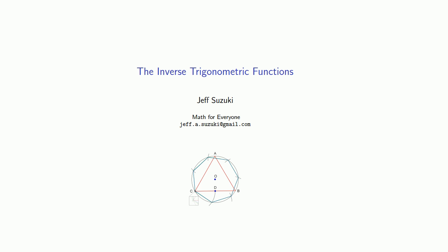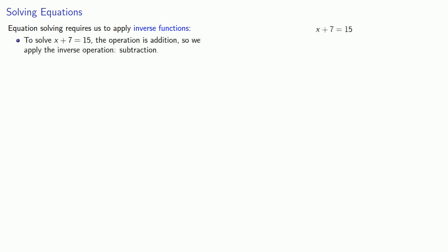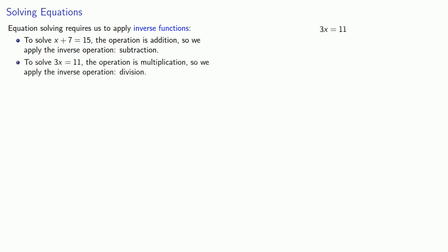But sometimes we want to go backwards. Ultimately, this will come back to solving equations, because equation solving requires us to apply inverse functions. So if I want to solve x plus 7 equals 15, the operation is addition, so we apply the inverse operation, subtraction. Or if I want to solve 3x equals 11, the operation is multiplication, so we apply the inverse operation, division.